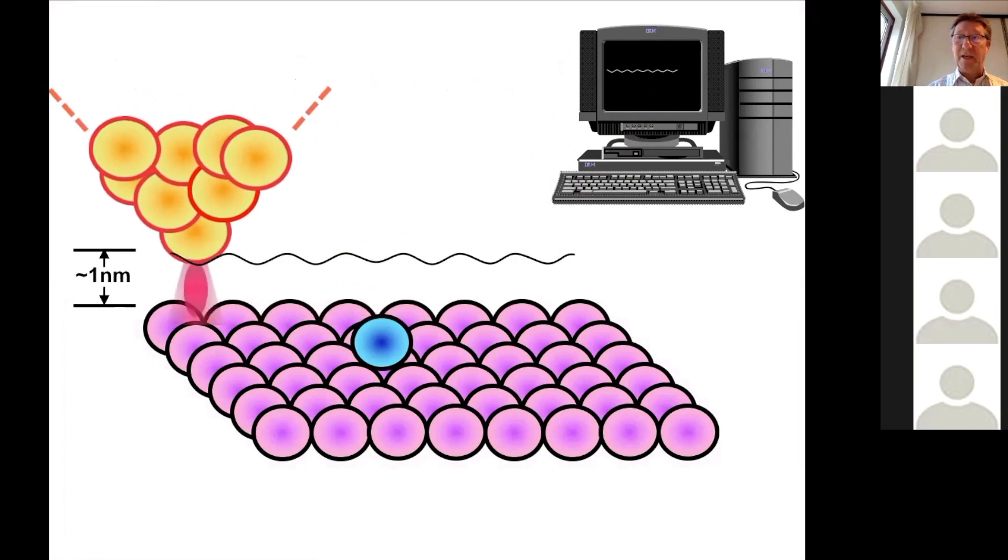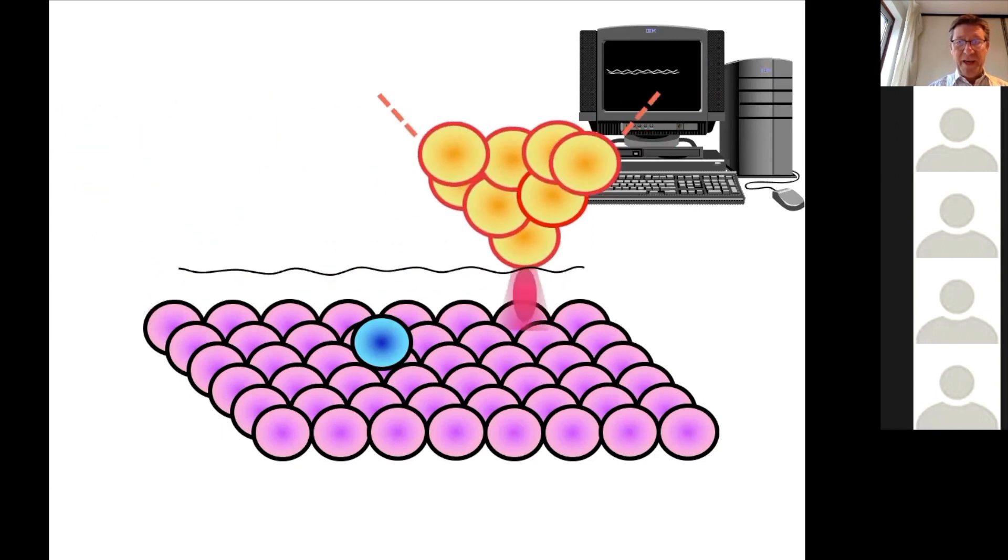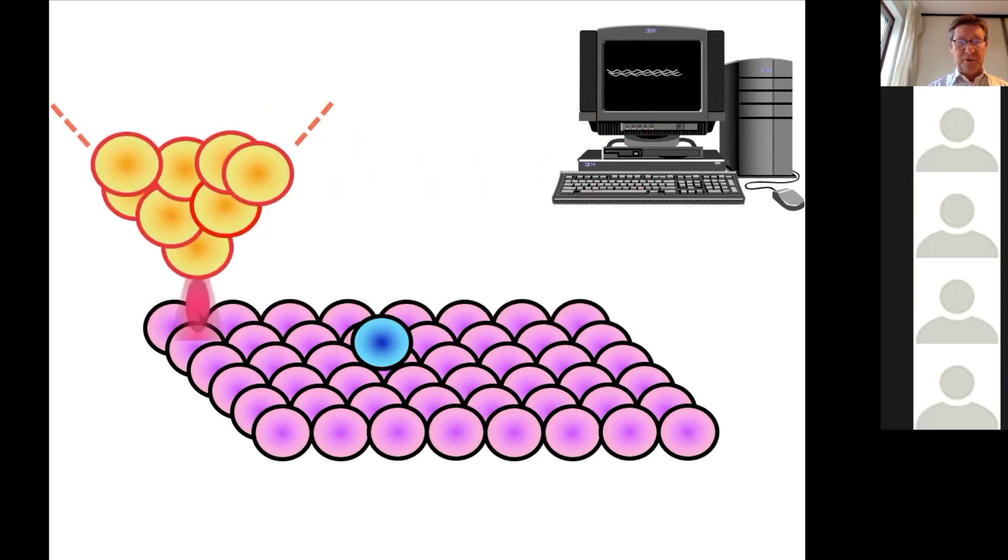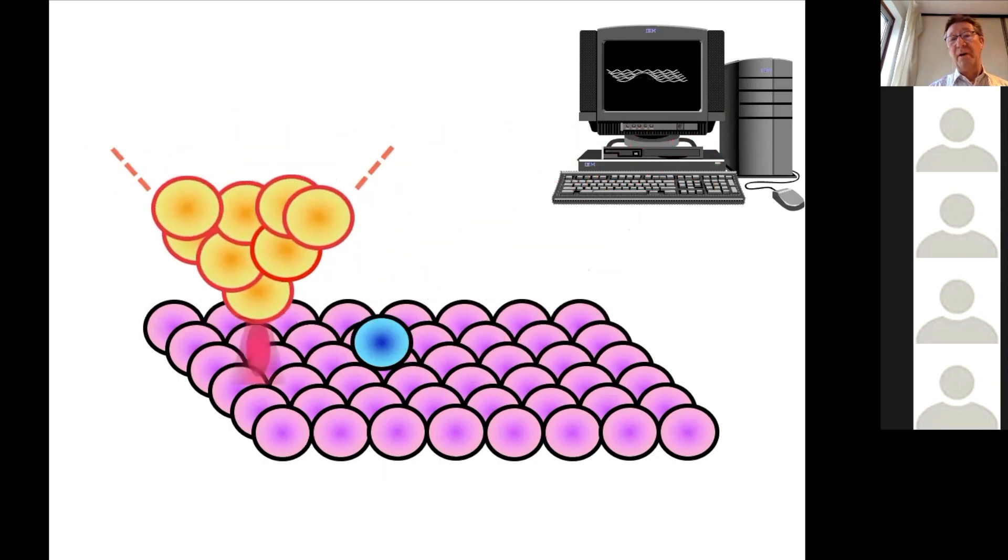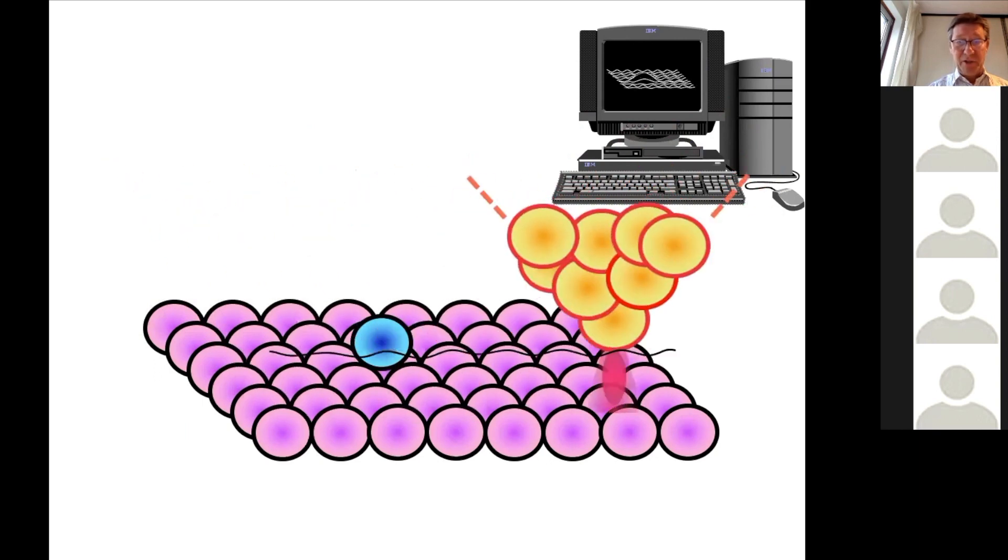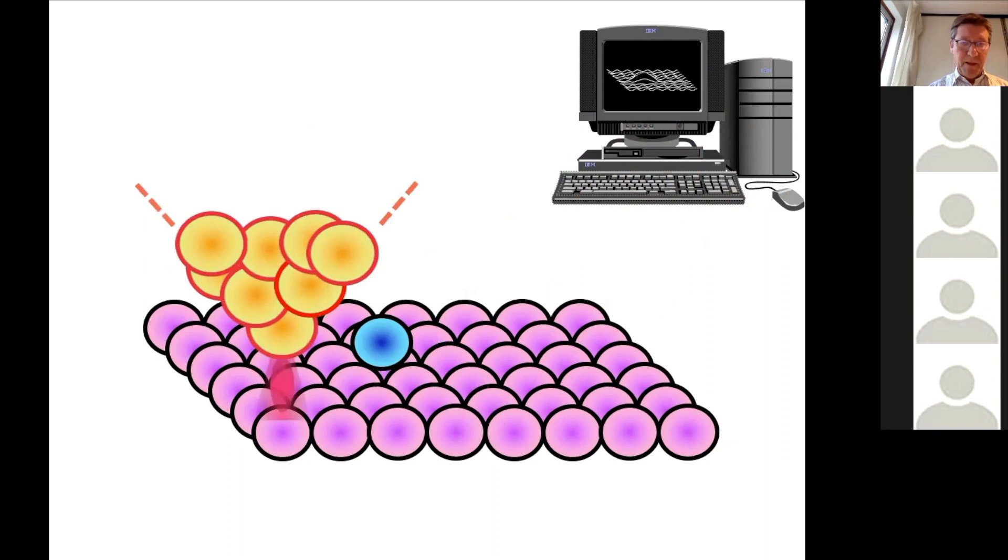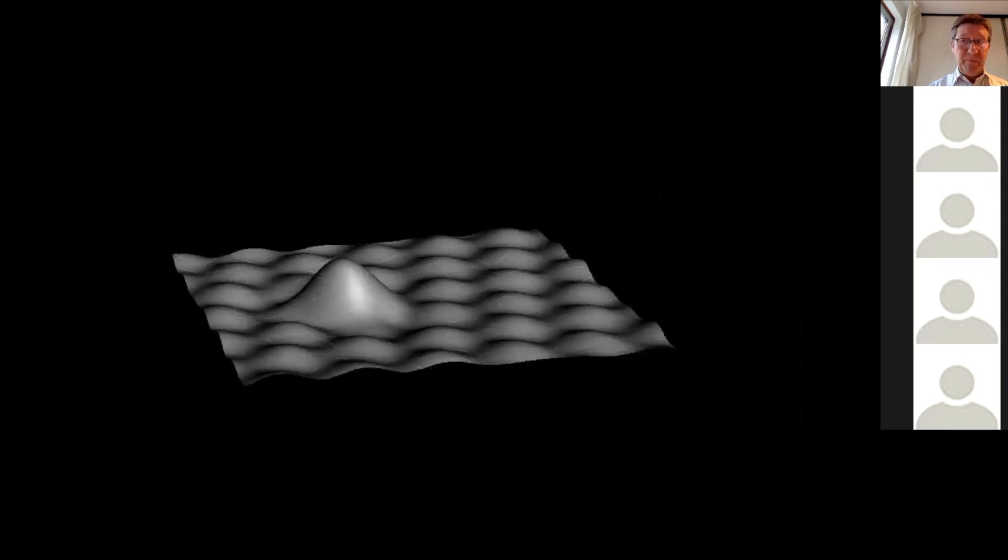And then you start scanning the tip over the surface. In Dutch they call it raster tunnel microscopy. They have a feedback loop to keep the current constant. In that way, you make lines over a surface. And if there's an atom, then suddenly the needle has to move up more for the current to remain constant. So in that way, you make a grid of lines and that you can visualize. So that is the visualization of an atom on a surface, on an atomically flat surface. This is the scanning tunneling microscope.